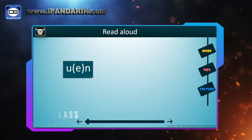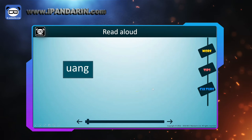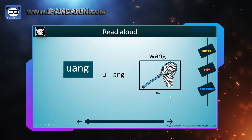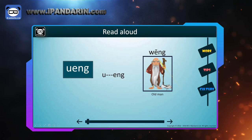UANG — repeat after me. And in Chinese, 网 (wǎng), which means net. UENG — repeat after me. And in Chinese, 翁 (wēng), which means old man.